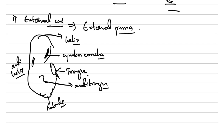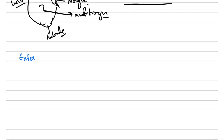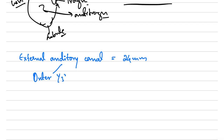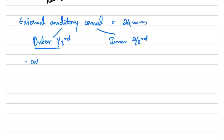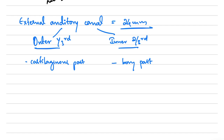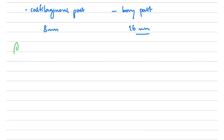Moving on from the external pinna, we have the external auditory canal. The total length is up to 24 mm. It is divided into the outer one-third, which is the cartilaginous part, and the inner two-thirds, which is the bony part. So the outer one-third is 8 mm and the inner two-thirds is 16 mm. That is about the external auditory canal.